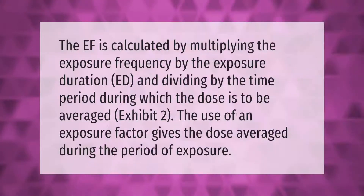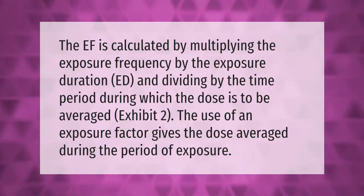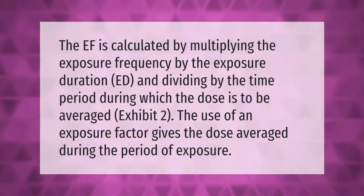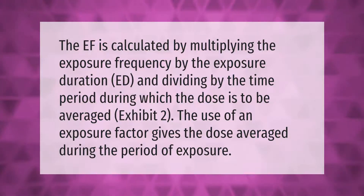The EF (exposure factor) is calculated by multiplying the exposure frequency by the exposure duration (ED), and dividing by the time period during which the dose is to be averaged. The use of an exposure factor gives the dose averaged during the period of exposure.